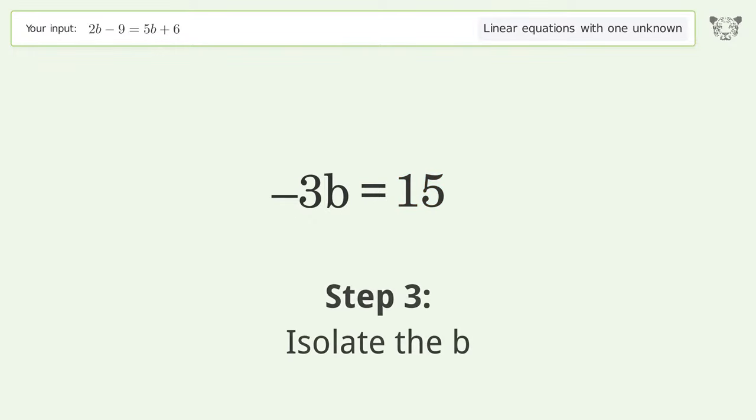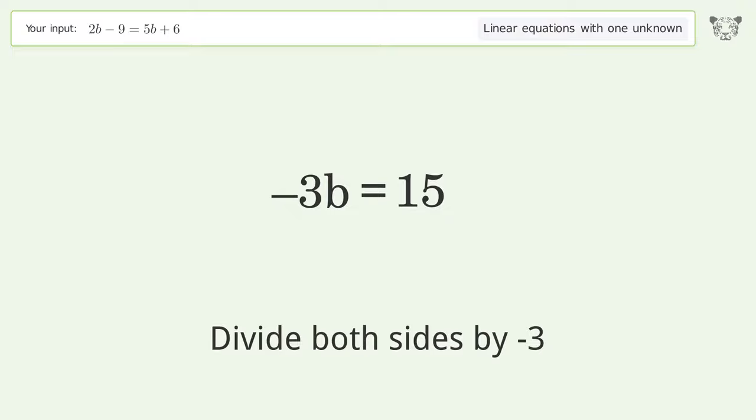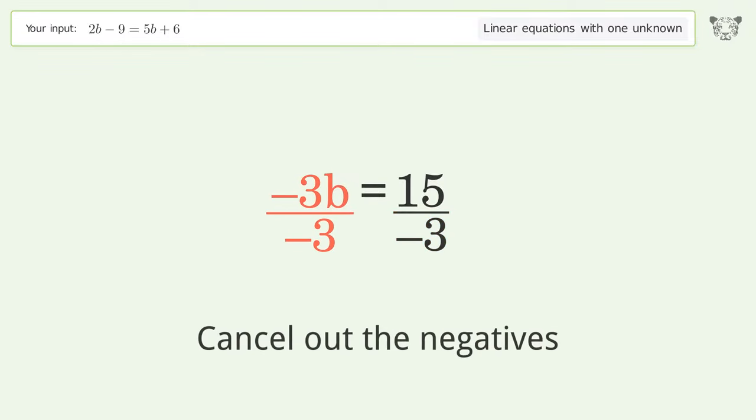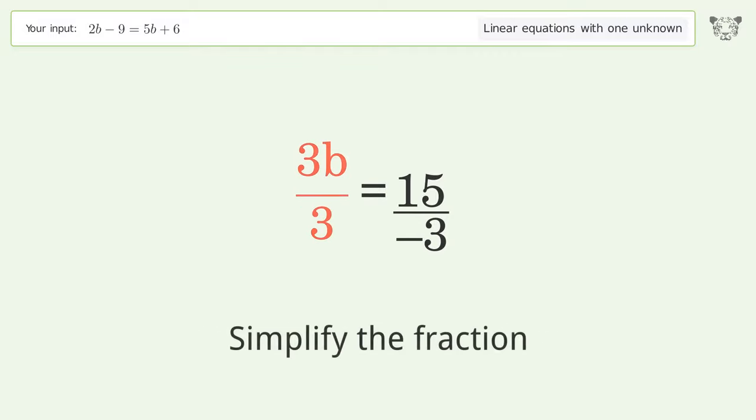Isolate the b. Divide both sides by negative 3. Cancel out the negatives. Simplify the fraction.